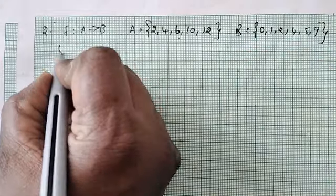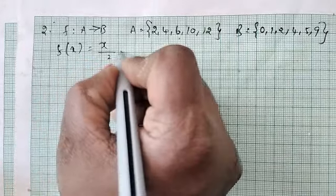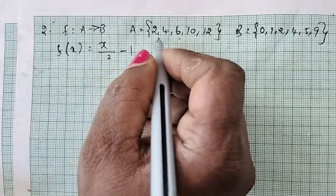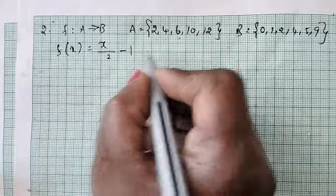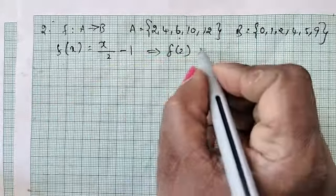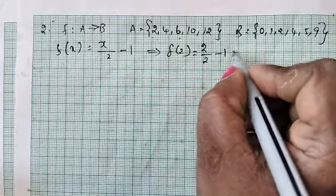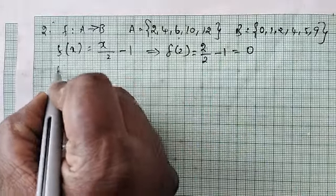Now the equation given is f(x) equal to x by 2 minus 1. So f(2) equal to 2 by 2 minus 1 equal to 1 minus 1 equal to 0.